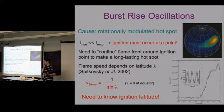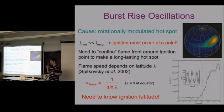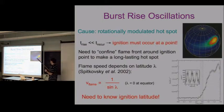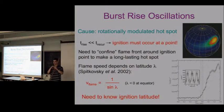Let me start talking about oscillations that occur in the burst rise. We think that what causes the oscillations in the rise is just the rotational modulation of a hot spot - the simplest picture: there's some hot spot on the neutron star, as it rotates it goes in and out of your field of view and generates the oscillations. We think this hot spot comes from the ignition and subsequent flame propagation of the actual thermal instability.